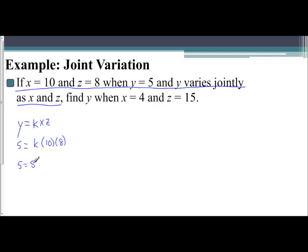So 5 equals 10 times 8 is 80k. Divide both sides by 80. And so 5 over 80 would simplify into 1/16.